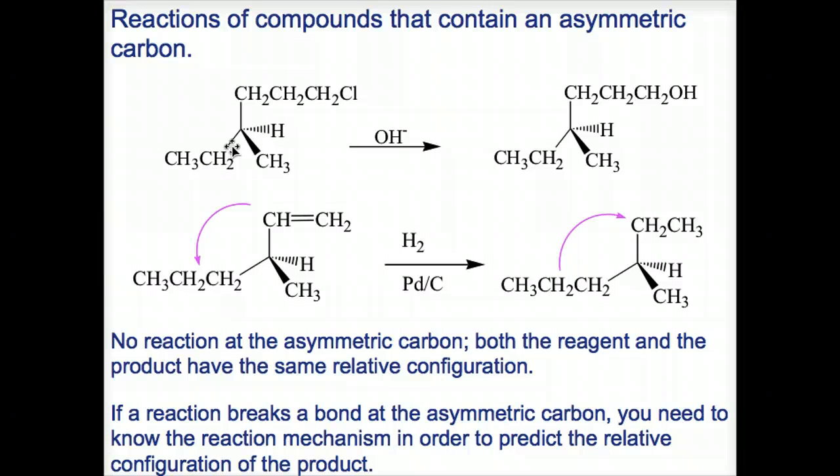The top reaction is S-1-chloro-4-methylhexane reacting with OH to form S-4-methyl-1-hexanol. How do we know both of these structures have an S-configuration? Since no bonds to the asymmetric carbon are broken, the reactant and product will have the same relative configuration.